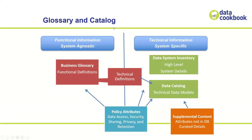You have your functional information and your technical information, so you're system agnostic. You have a definition for something like what an active customer is — someone who has made a purchase within the last year, whatever that might be defined as. That is your functional definition. Over here, you've got all your technical data systems: maybe a point of sale system, a CRM system, a finance system, and a transactional database — a whole bunch of different systems with documented data models.